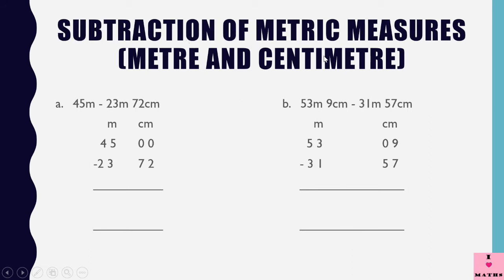Now, subtraction of metric measures for meters and centimeters. Here, we are going to subtract 23 meters 72 centimeters from 45 meters. Suppose you have a ribbon which is 45 meters in length and from this ribbon you have cut a piece which is 23 meters and 72 centimeters long. Now you want to find out how much ribbon is left, so naturally you will have to subtract.